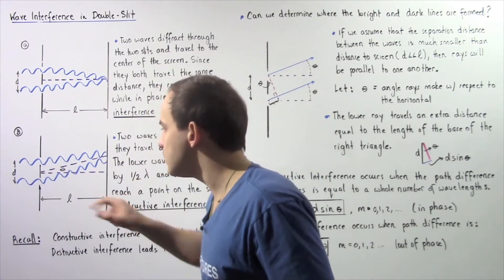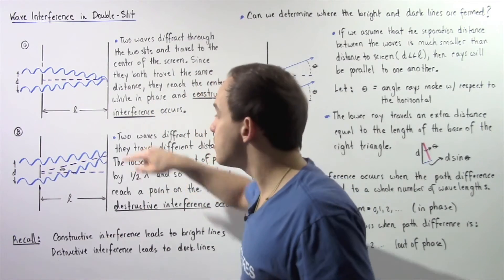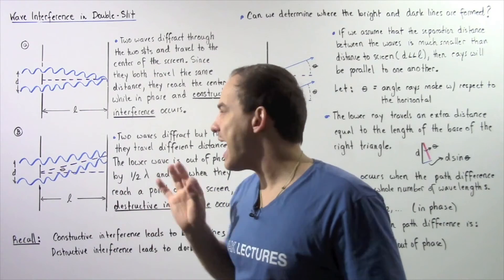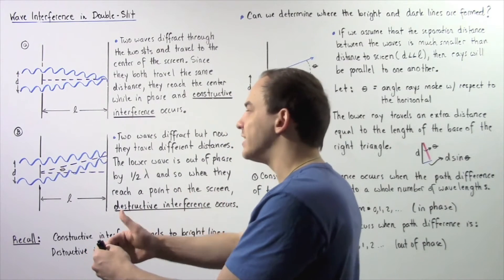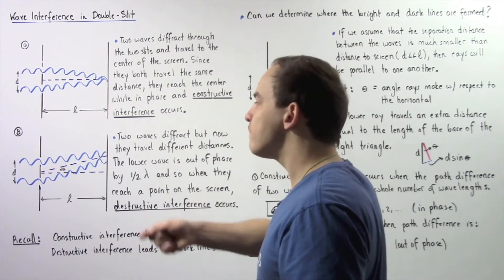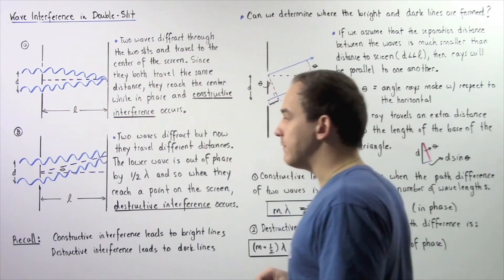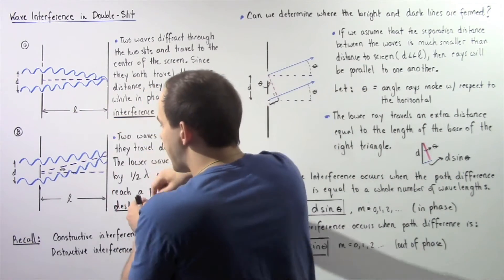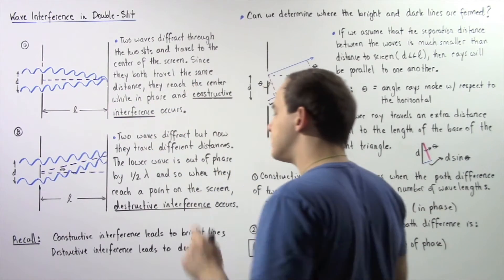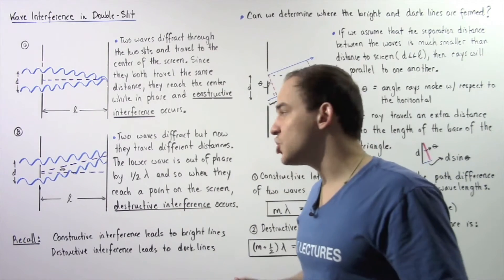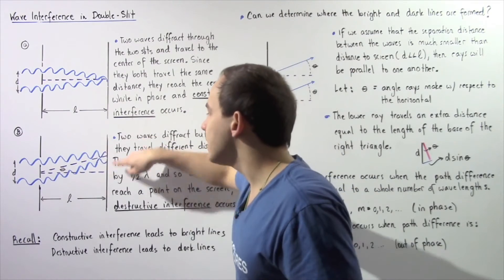and initially begin in phase, because this bottom wave has to travel more, they will end up being exactly out of phase. The lower wave travels a distance of one-half multiplied by the wavelength more than the top wave. So they end up out of phase, their amplitudes cancel out, destructive interference takes place, and that leads to dark lines or dark fringes on this screen.